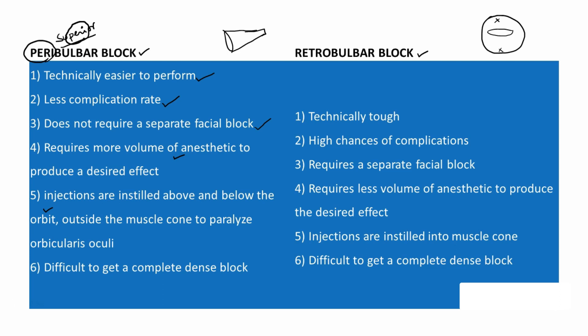Due to the denser muscles, it is difficult to get a complete dense block — these are the two disadvantages of peribulbar block: more volume of anesthetic needed and possibly incomplete block. For retrobulbar block: it is technically tough, has high chances of complication, requires a separate facial block, but needs less volume of anesthetic. Injections are instilled into the muscle cone which may lead to severe complications, but it is easy to achieve a complete dense block.